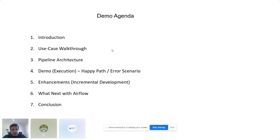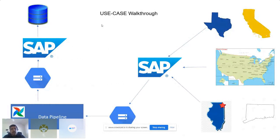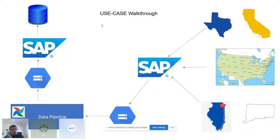I'll begin with the use case walkthrough. Around one year back, I was working for a railroad organization — the biggest railroad company in North America. What they had done is they acquired another railroad, and we were supposed to migrate the data from the acquired railroad to our system. That's where we basically used Apache Airflow for automation purposes.